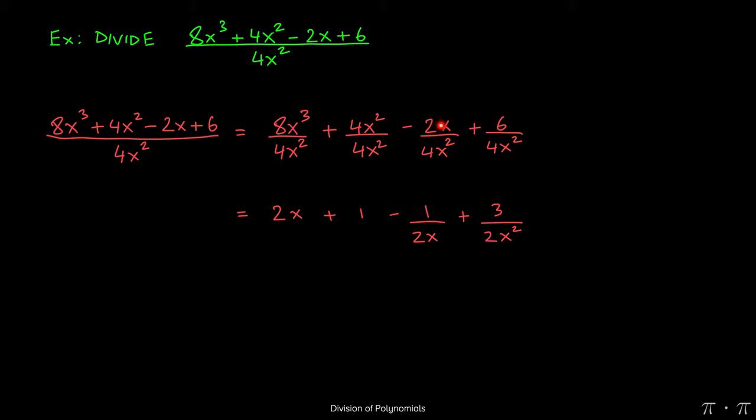But here you'll notice that there's a single x on top and a product of 2x's on the bottom. So one of the 2x's in the denominator can divide out the 1x in the numerator, leaving behind a single x in the denominator.